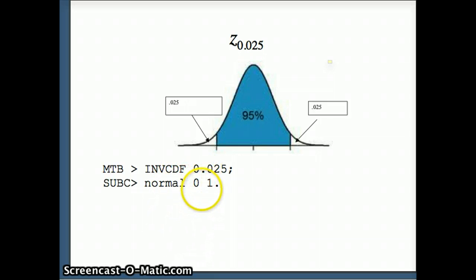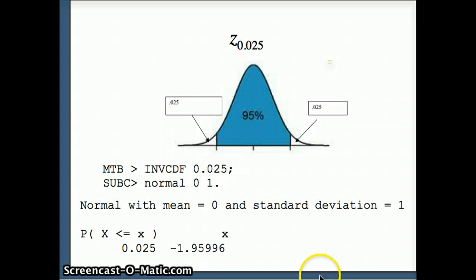So Minitab tells us that with the probability of 0.025, the x-score or in this case z-score is negative 1.95996, and we typically round that to negative 1.96. So I have negative 1.96 here and positive 1.96 here.